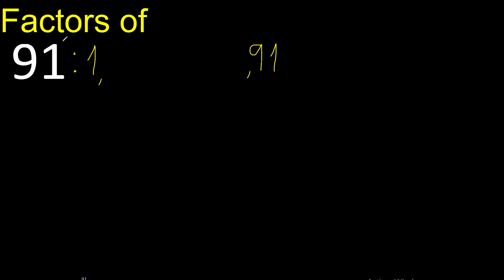7 — 91 can be divided by 7. 91 divided by 7 is 13.